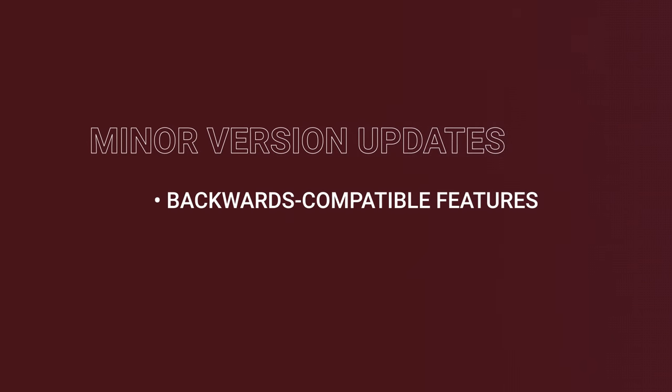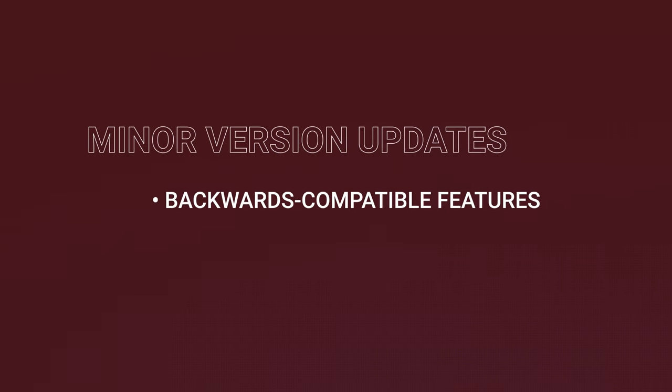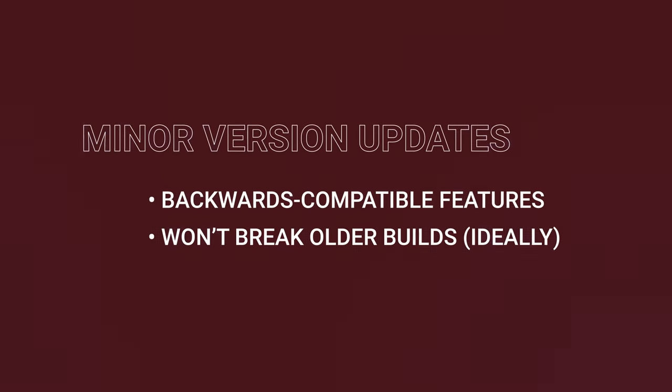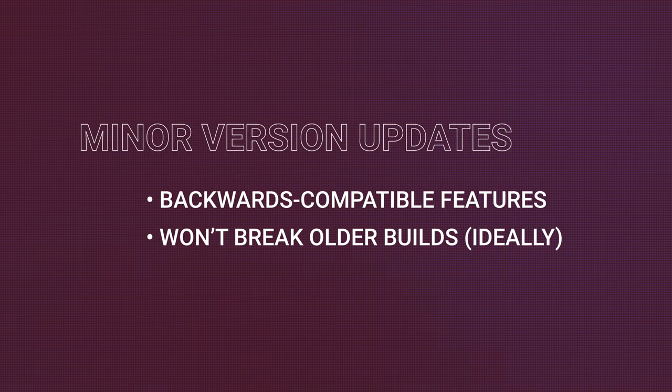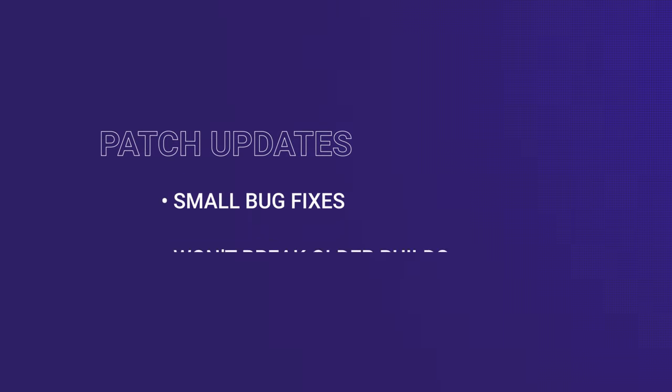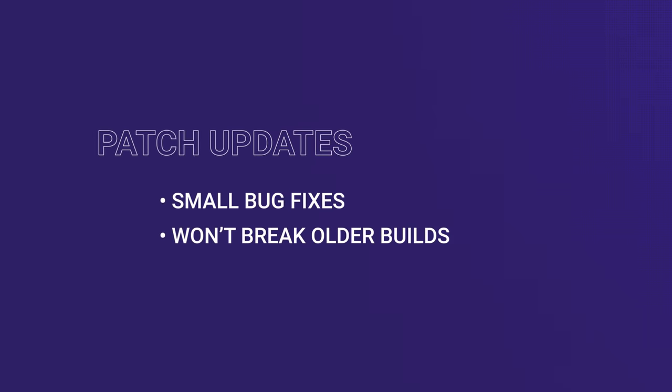Minor version changes are for new features that are backwards compatible and won't break anything when you change it, ideally. And patch updates are for small bug fixes that also won't break anything. When a new version is released, the digits to the right will reset back to 0.